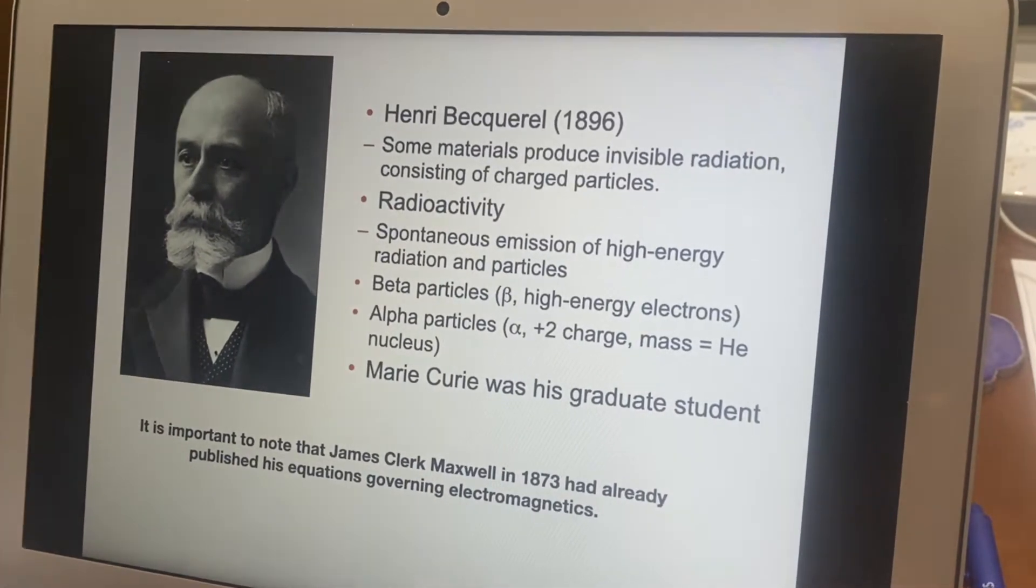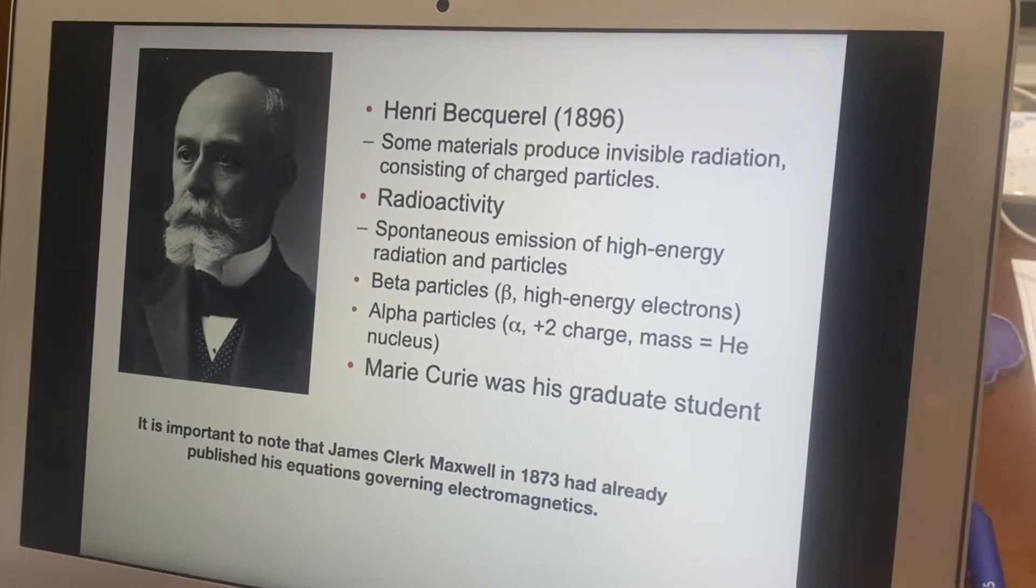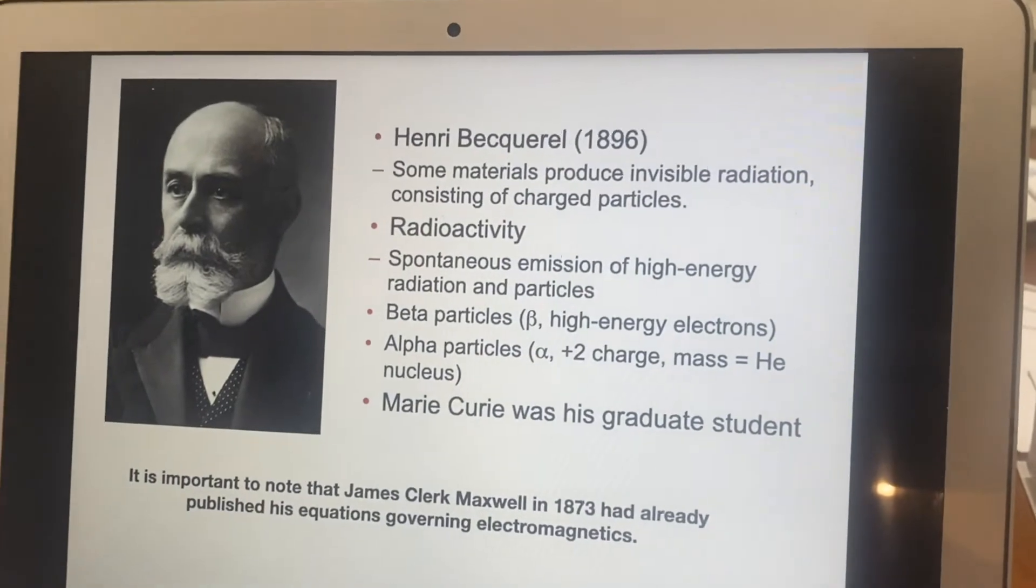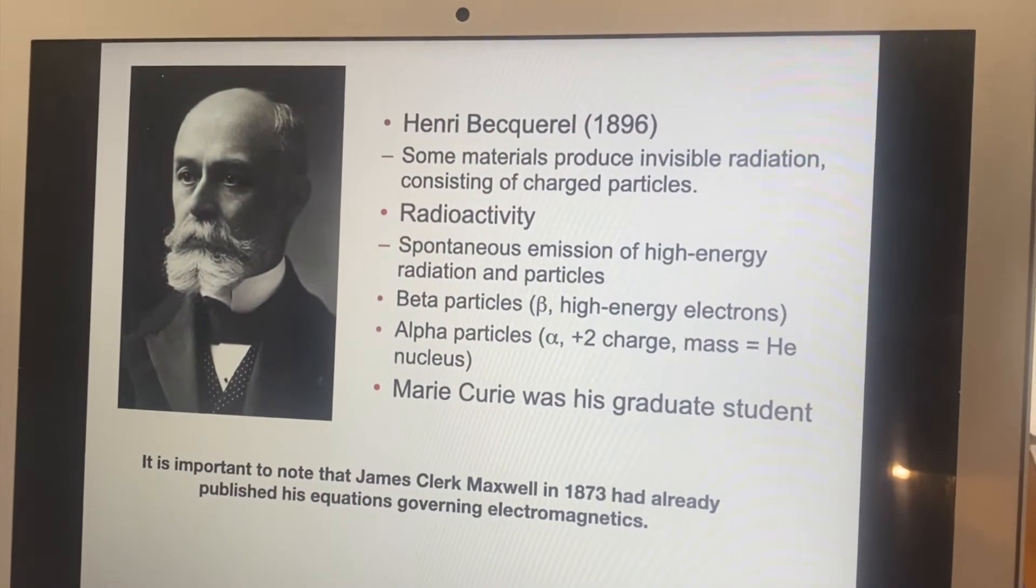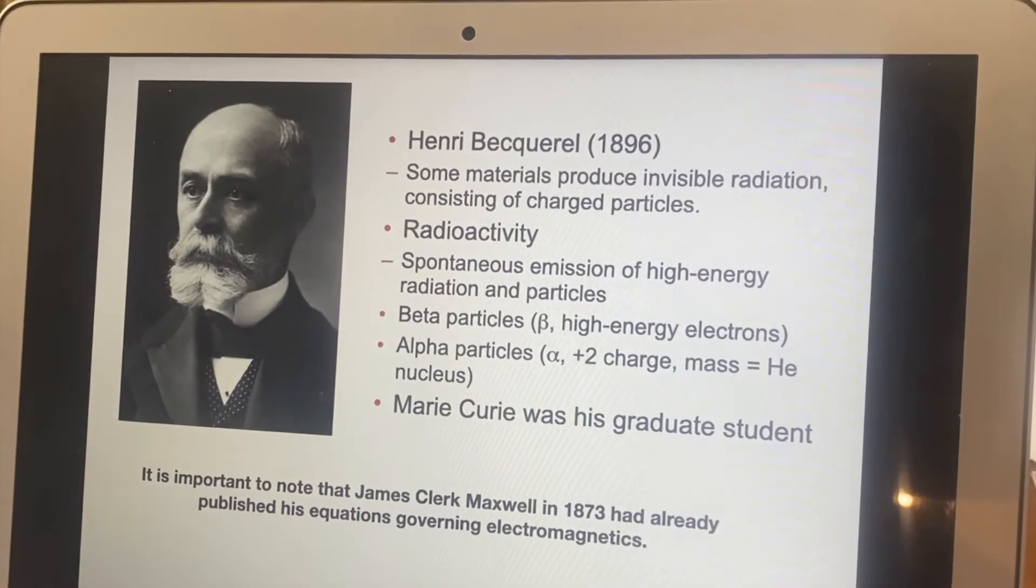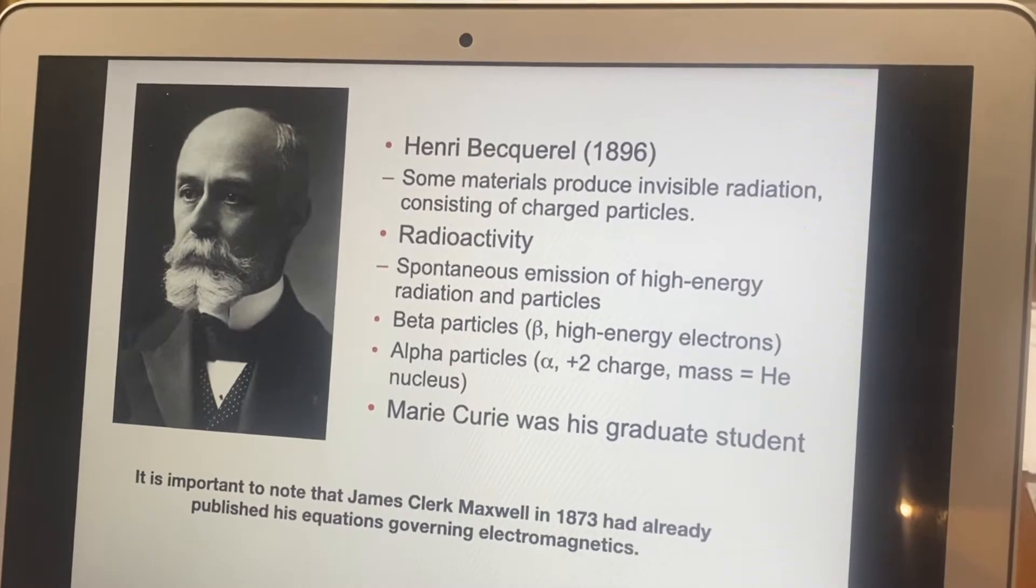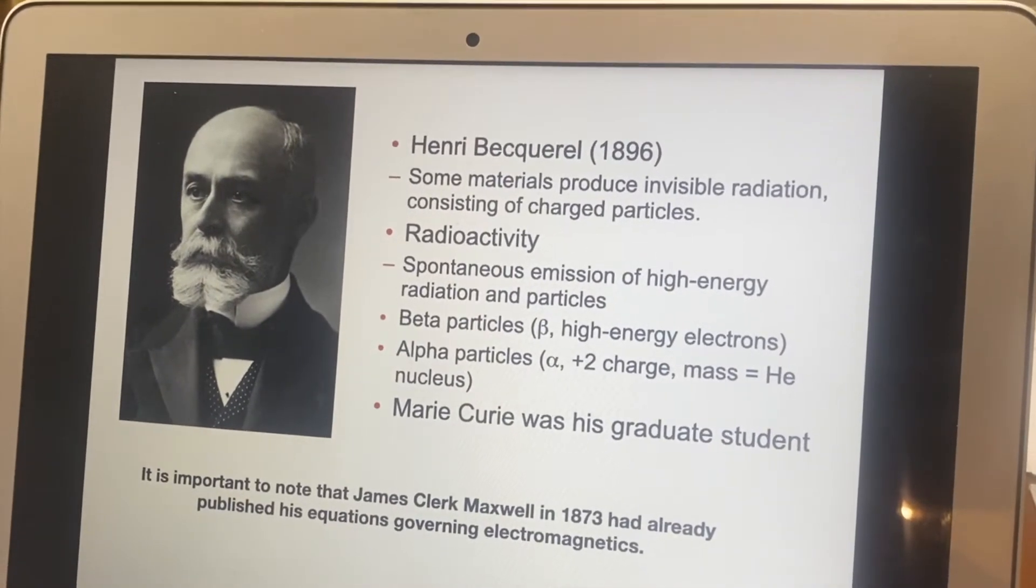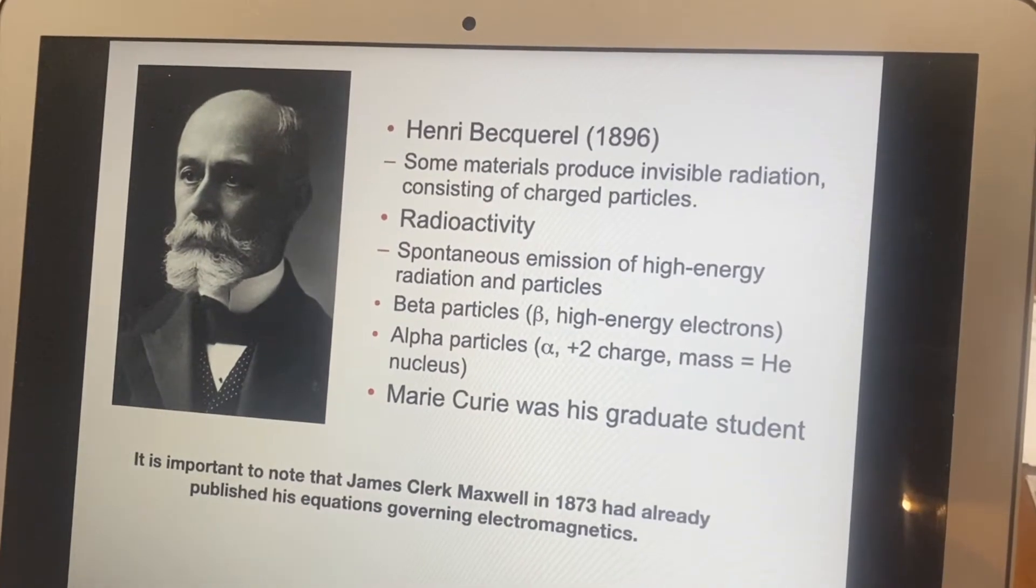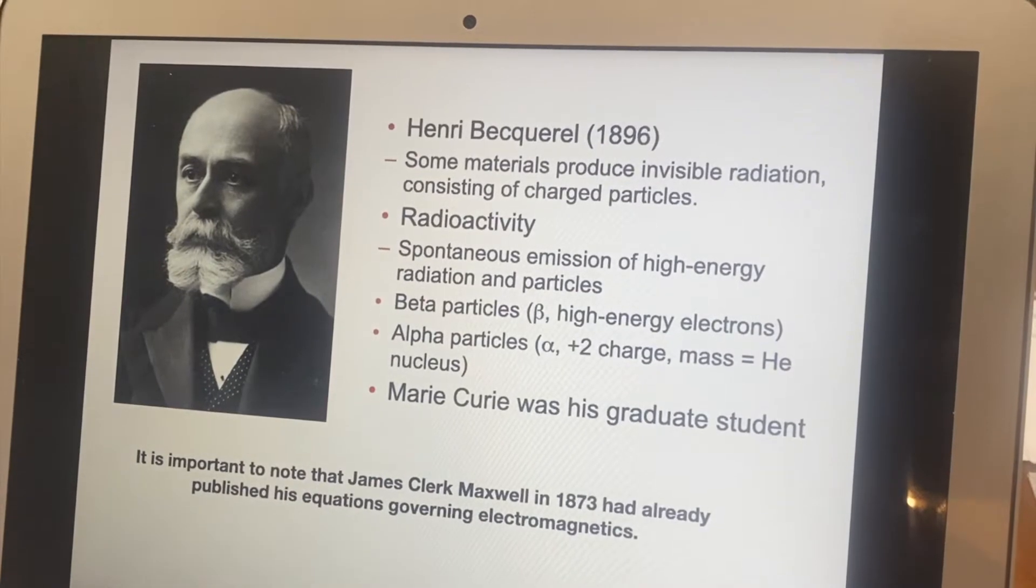This radioactivity happens spontaneously, and the emission is high energy radiation, we don't normally think of just light, but something more powerful than what we as humans can naturally see, and particles. We had a few that he had looked at, there were beta particles, which turned out to be electrons moving rapidly, high energy, in other words, because of their kinetic energy.